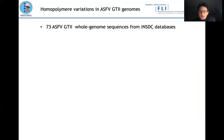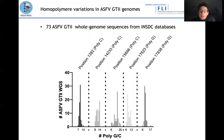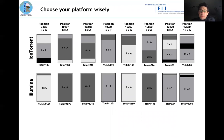To further illustrate this — this next graph shows a comparison of 73 ASF genotype 2 whole genome sequences from databases. At every poly-C or poly-G position, published sequences show huge variations in the number of poly-C and poly-G repeats. This is seen across all platforms — MinION, Illumina, and Ion Torrent — and gives you an idea of how complicated it is for even modern sequencers to correctly call these homopolymer stretches. We actually do not even know which is the correct number of homopolymers in these specific regions.